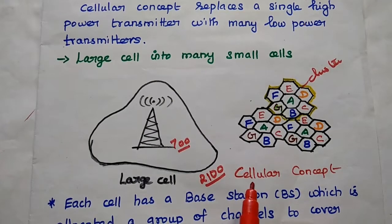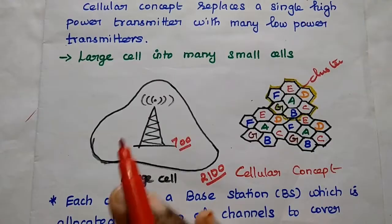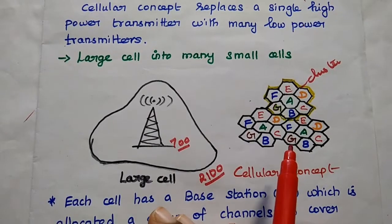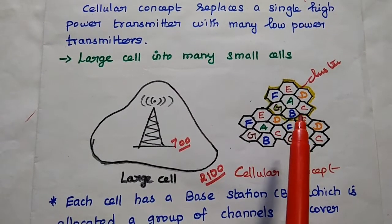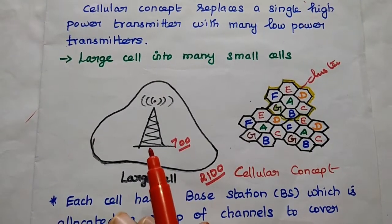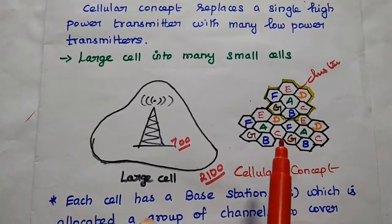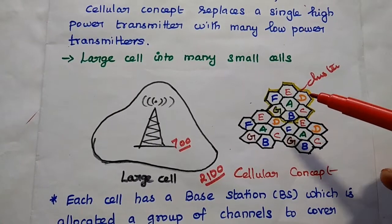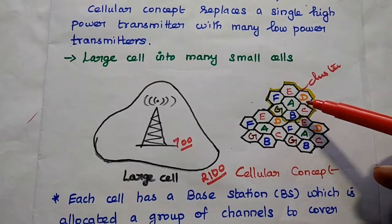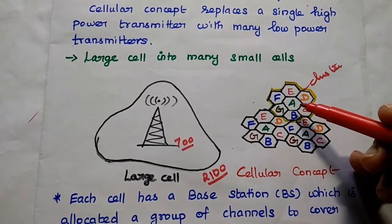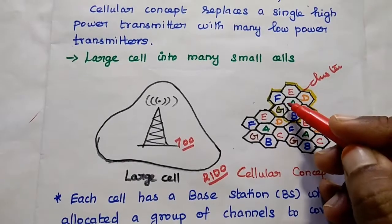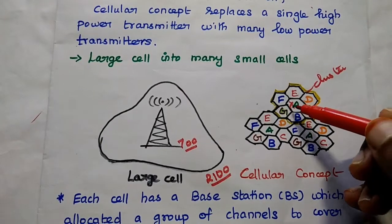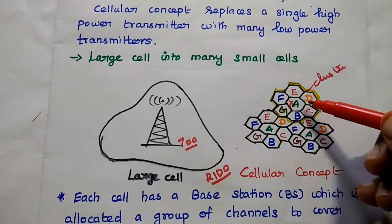So here we can introduce the cellular concept. In this, we are going to split this large cell into many small cells with many low power transmitters which can cover the entire area of the small cells. Instead of having a large power transmitter, we can have many low power transmitters with many smaller cells. Here a cell represents a geographical unit with a limited coverage area. Each cell has its own base station. A base station is a transceiver which supports transmission and reception — it is a communication point for one or more mobile devices within that area.